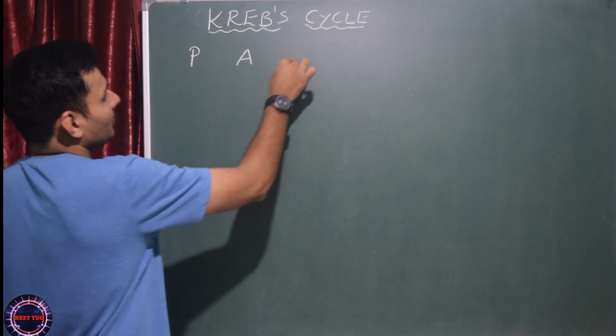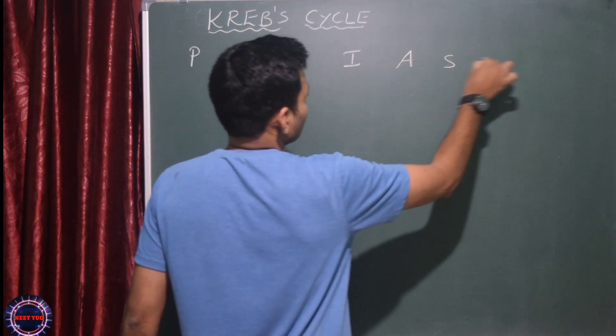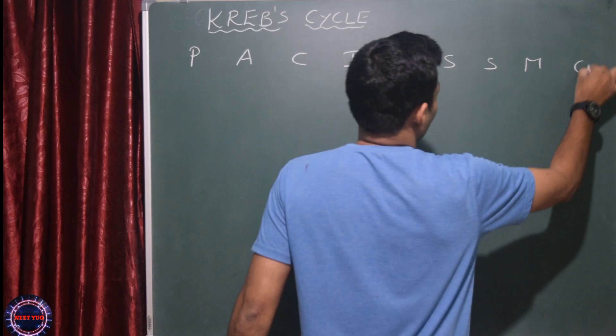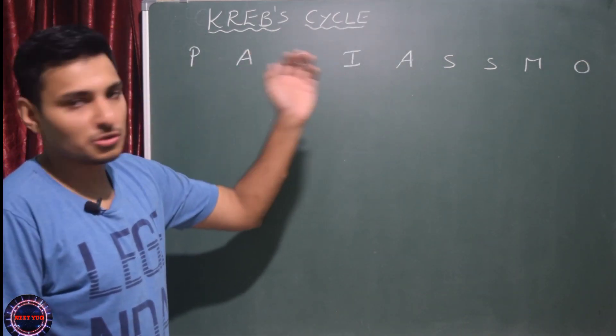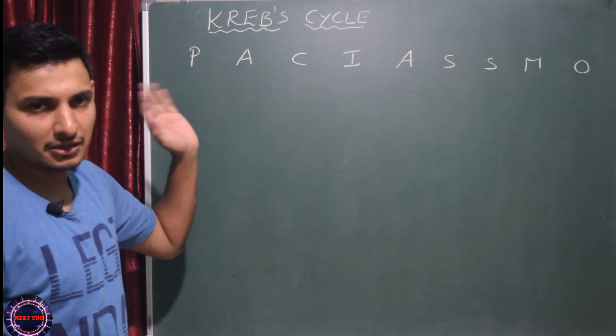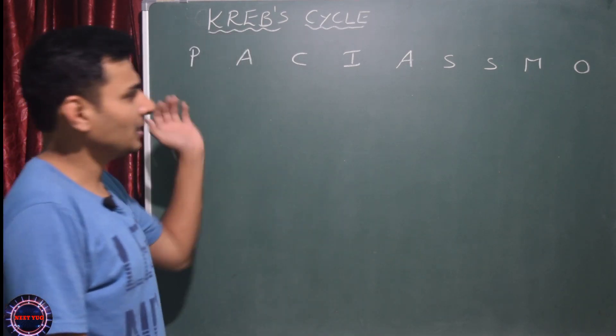So first, Krebs cycle - the trick is this: P, A, C, I, A, S, S, M, O. This is PACHIASMO. This is the code actually for learning Krebs cycle. This code will help you students, it's very simple.